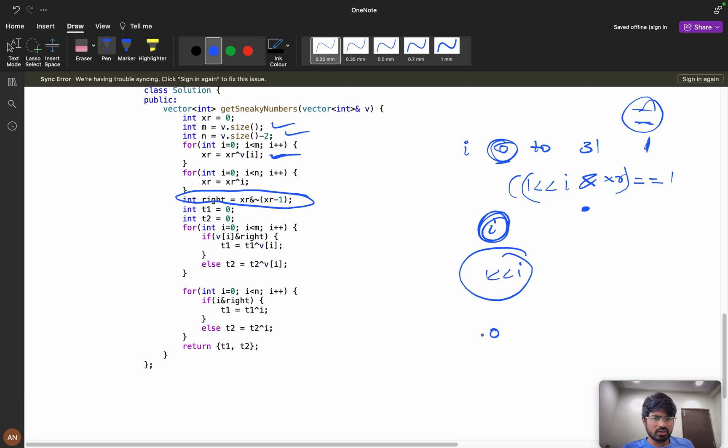What is this right? One left shift of i. Now suppose you are at position 0, 0, and at this position you are getting one, so that means you will store 4, and you are going to separate it. v of i AND right, that means all the bits where one is present, I will separate it: t1 XOR v1 of i. If it is 0, then t2 XOR v2. Same thing I will do here. Finally, I am going to return t1 and t2.